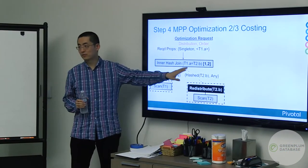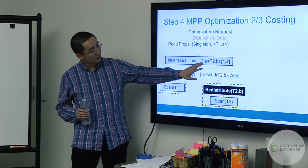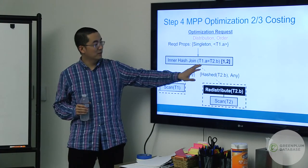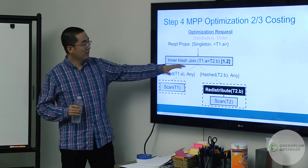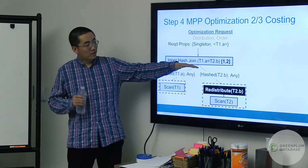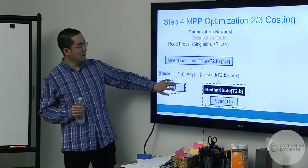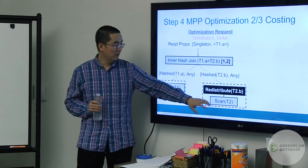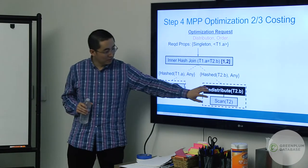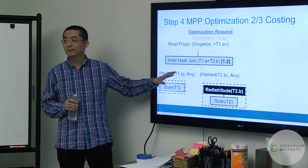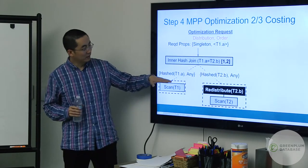If we know this is a hash join, then both tables need to be hashed on the join column. T1 should be hashed on column A, and T2 should be hashed on column B. We propagate these requirements down: for scan T1, hash on T1.A; for scan T2, hash on T2.B. If T1 is already distributed on T1.A, no further motion is required, meaning no rows need to be moved.